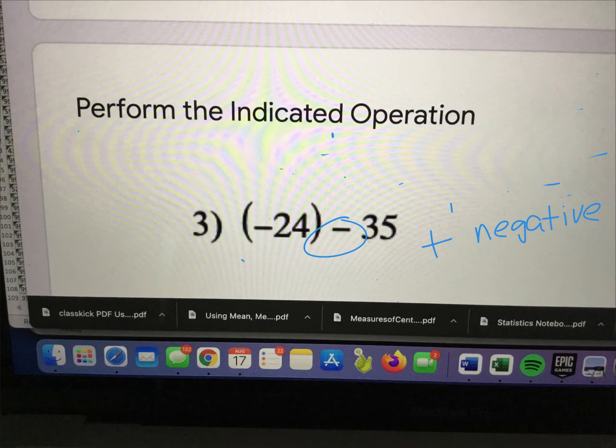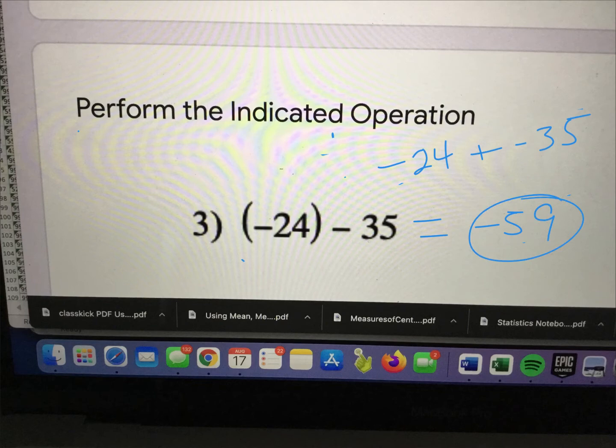So this basically has the same impact as adding two negatives together. So you're really saying negative 24 plus negative 35, which means our total sum is going to be a negative 59 for this first problem.